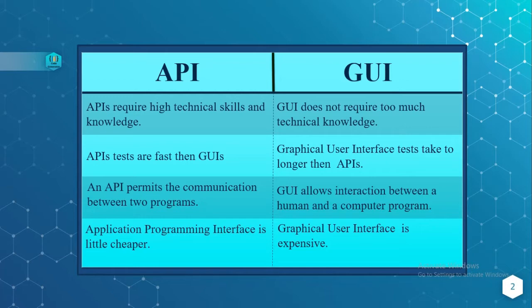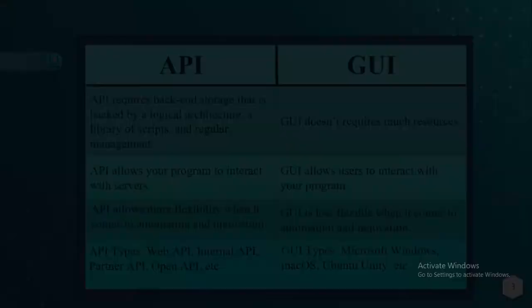Application Programming Interface is a little cheaper and less costly when compared to GUI. Graphical User Interface is expensive because it communicates with the human, that's why it's costly.